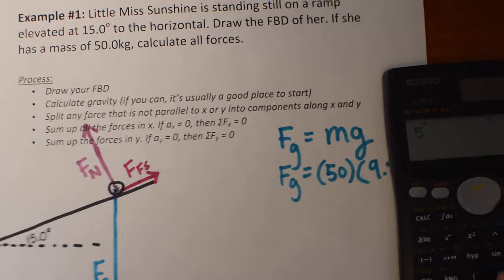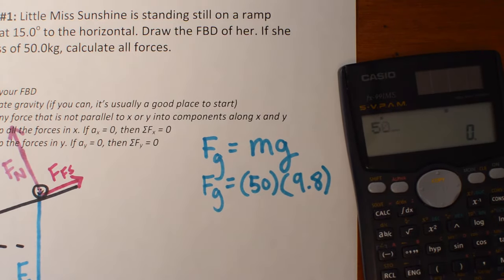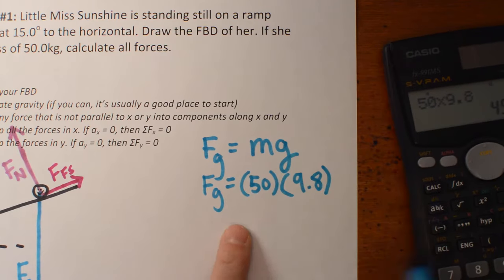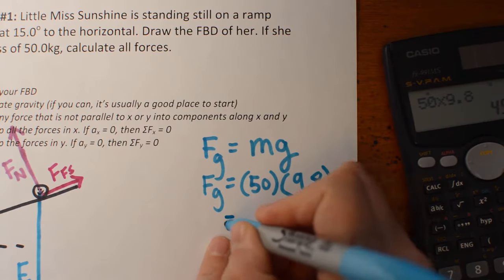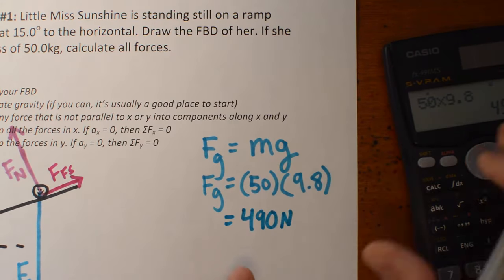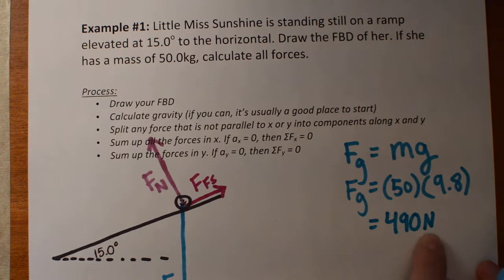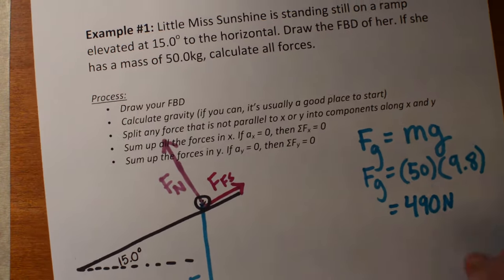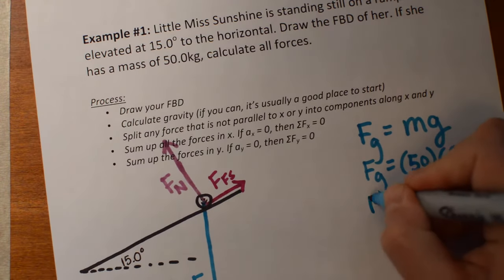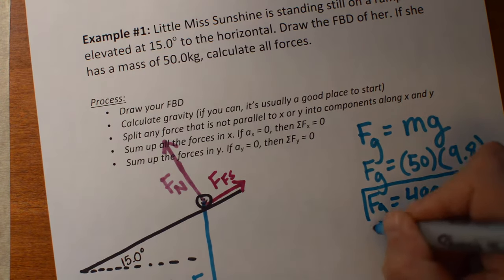So 50 times 9.8 gives me 490 newtons. In terms of sig figs, that's actually great — I have three sig figs everywhere, so I can keep it like that. So I found my first force.